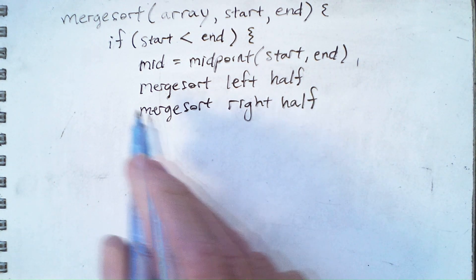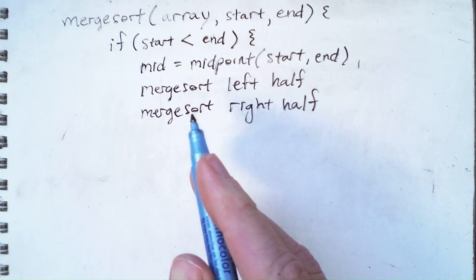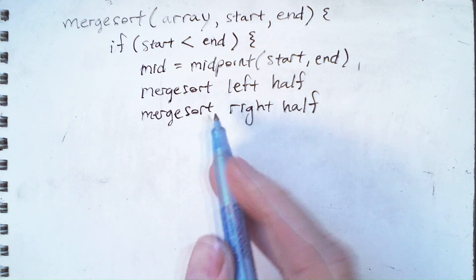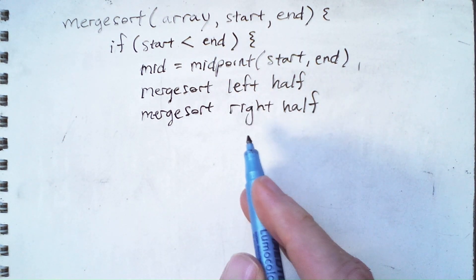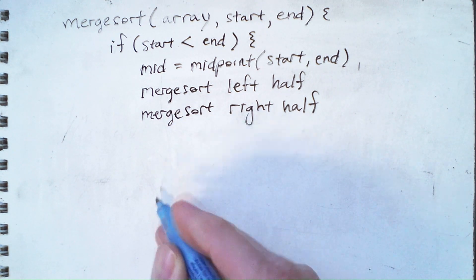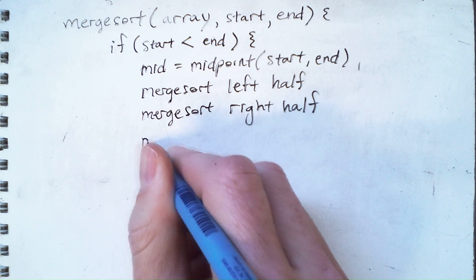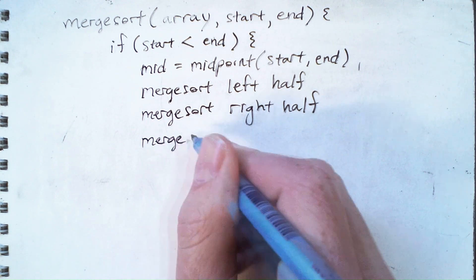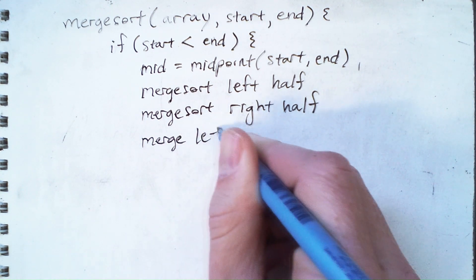And because merge sort will sort the subarray that is defined by start and end, we know we have a sorted left half and a sorted right half. And therefore we can merge the left and right halves.